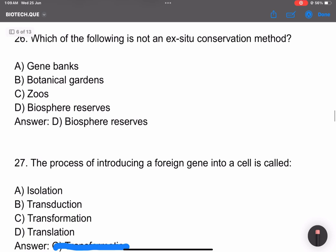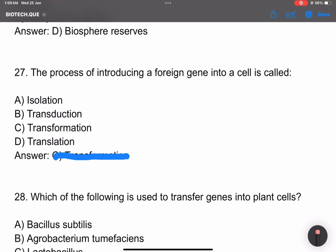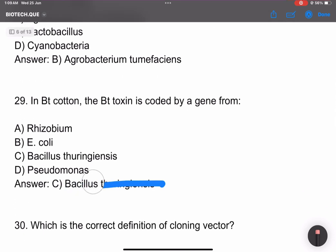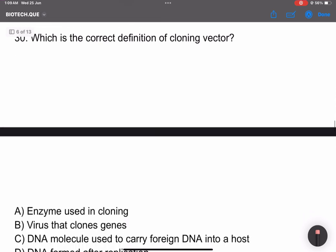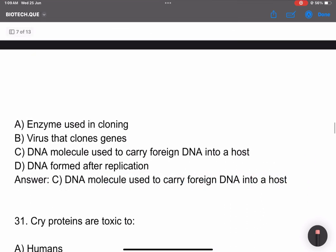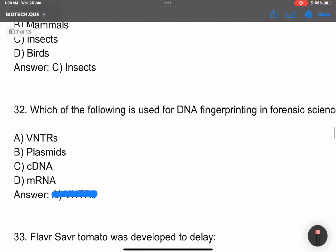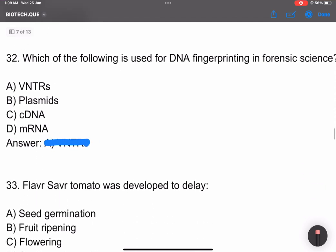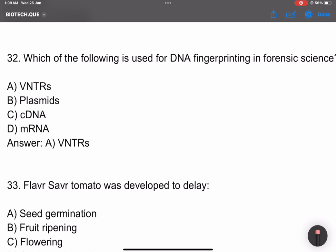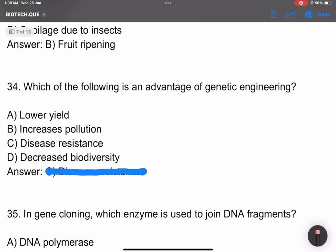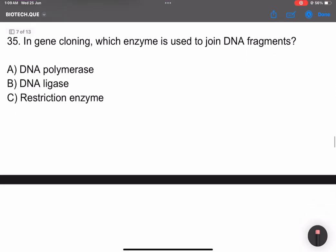The term host refers to organism being used. Ex situ and in situ are biodiversity conservation methods. The process of introducing a foreign gene is called transformation. BT cotton contains Bacillus thuringiensis toxin. Which is the correct definition of cloning vector? DNA molecules used to carry genes. Cry protein is toxic to insects.